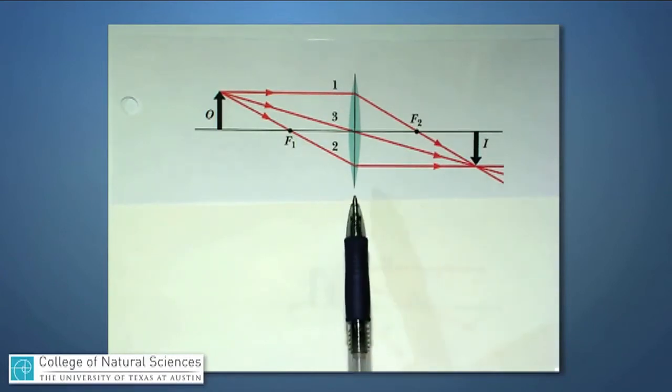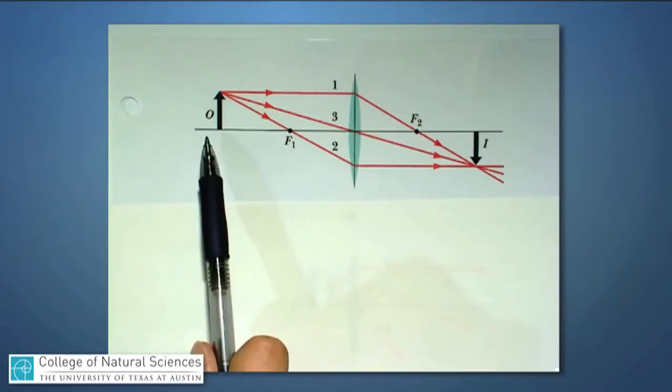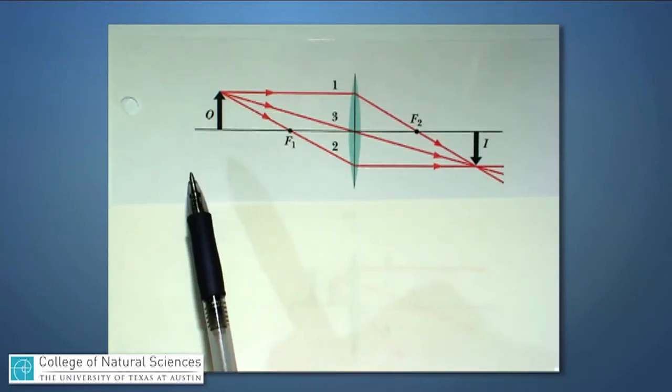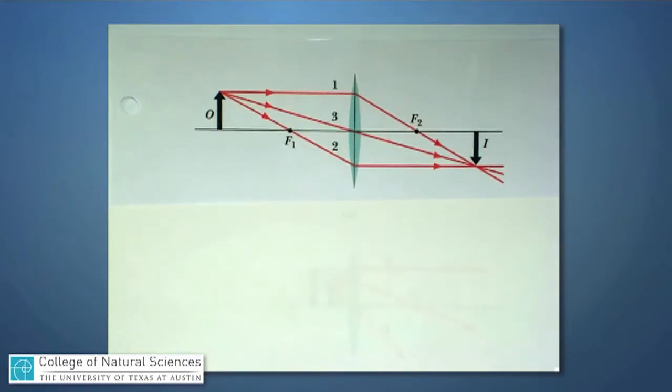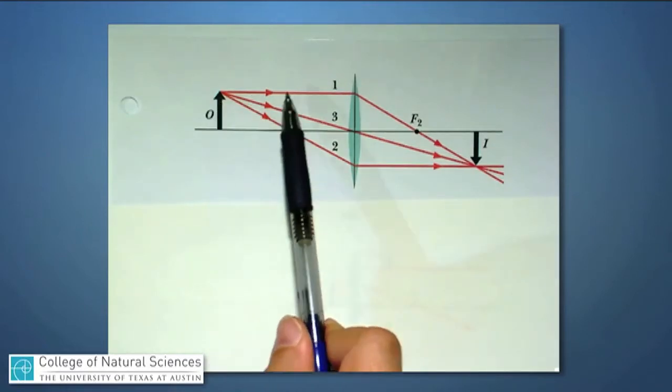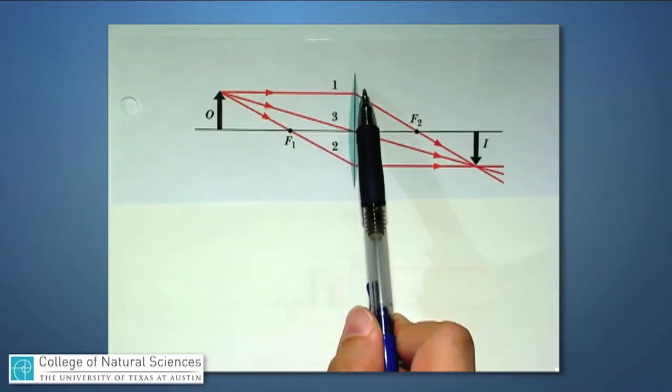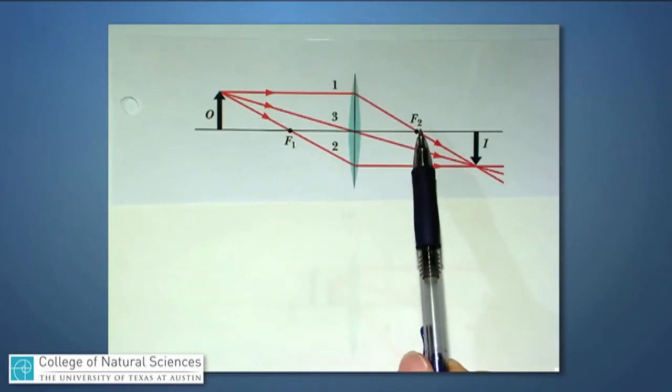So let's first take an example of a convex lens where I've placed an object far away from the lens, further away from the lens than the focal length. So such a lens, if I take light ray number one and I bring it in parallel, that light ray should head toward the other focal point and keep on going.